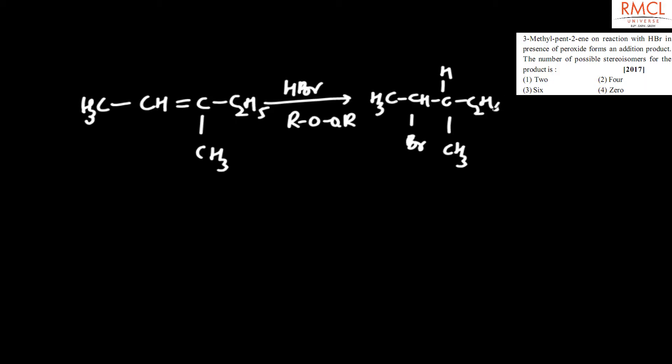The reactant structure is CH3-C(CH3)=CH-C2H5. It reacts with HBr in presence of peroxide to form CH3-CH(Br)-CH(CH3)-C2H5.